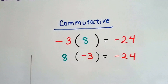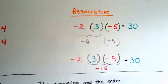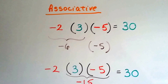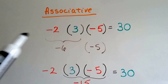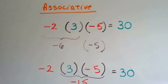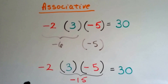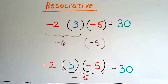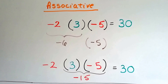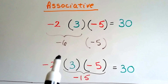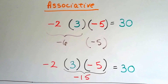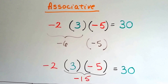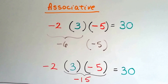It's still going to equal a negative 24. With the associative property, if we have three different rational numbers — negative 2, positive 3, negative 5 — we can multiply the negative 2 to the positive 3 and get a negative 6, then multiply it to the negative 5, and they have like signs.